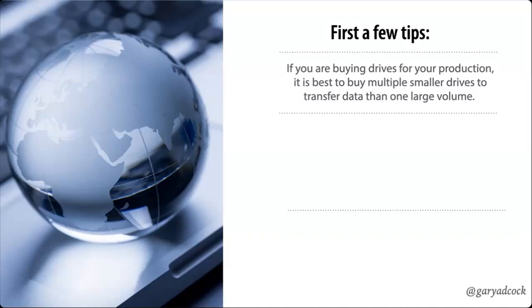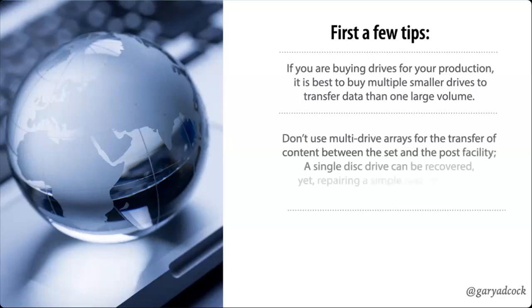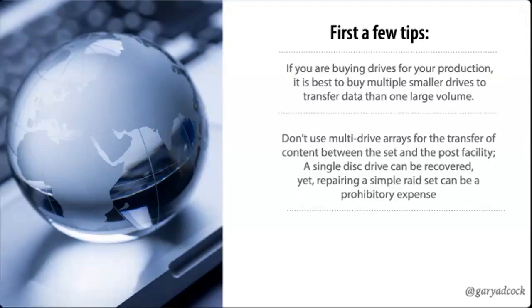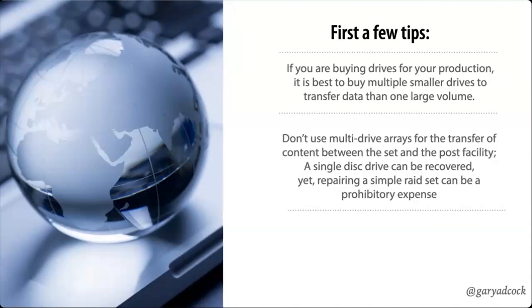One of the things that goes into that is shuttle drives and how you work with them. I always tell people, if you're buying drives for production, buy smaller ones. Don't necessarily buy bigger ones. A big drive — which is usually multiple physical hard drives inside the case making one large volume — can have issues. These multi-drive arrays become disconcerting when used for production; they can get bumped, jarred, and one of the drives can fail, then you lose everything.